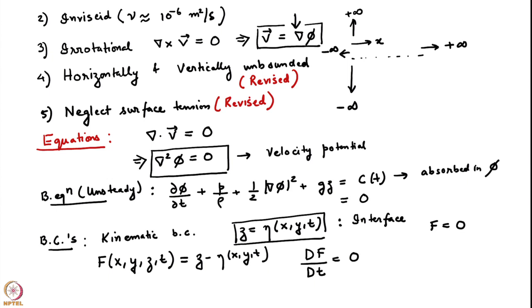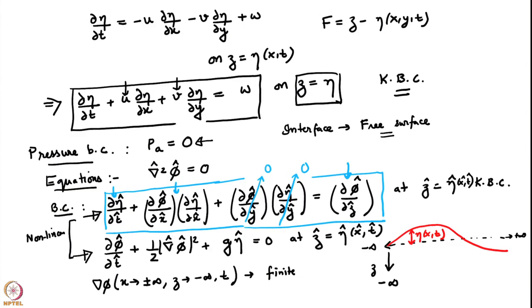With all these approximations we were led to the Laplace equation for the velocity potential phi. The pressure field was governed by an unsteady Bernoulli equation. We also had boundary conditions, among them a new one called the kinematic boundary condition. It is essentially a statement that the interface or free surface is a material surface — an additional statement of mass conservation. We also looked at the pressure boundary condition: we ignore the gaseous medium above, so the air is quiescent and only exerts a pressure on the fluid below, which can be assumed to be zero.